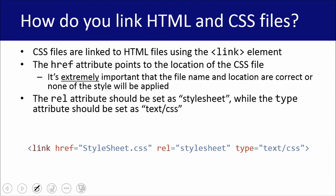Let's talk about the link tag. CSS files are linked to HTML files using the link element. The link element has an href attribute which points to the file source for the style sheet. It's really important that we make sure our file name and location are correct, or else none of our style will be applied and we'll keep getting those plain ugly HTML pages. We use the rel attribute set as stylesheet, and the type attribute set as text/CSS. This is the way it's done every single time — the only thing that should change is maybe the name of the file itself and its location.